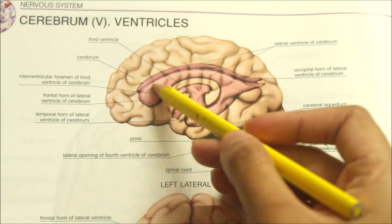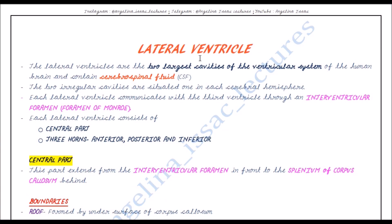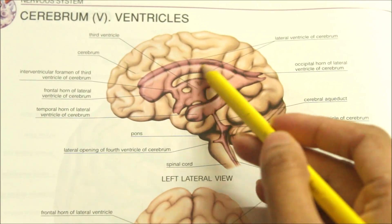Each lateral ventricle consists of a central part and three horns: the anterior horn, the posterior horn, and the inferior horn. To summarize the introduction: lateral ventricles are the two largest cavities of the ventricular system, situated one in each cerebral hemisphere, each communicating with the third ventricle through the interventricular foramen, or foramen of Monroe.